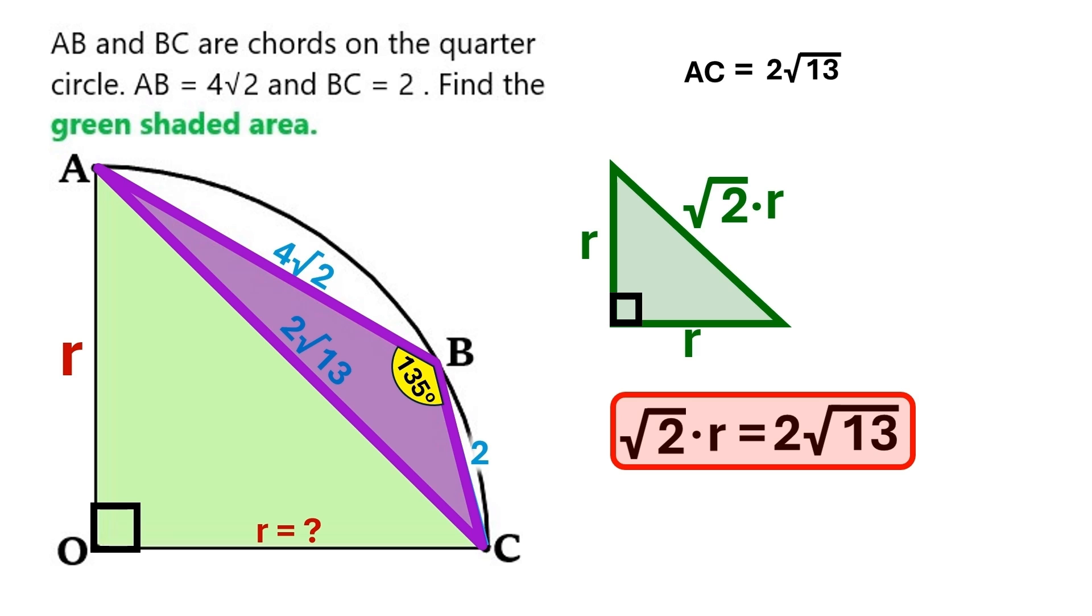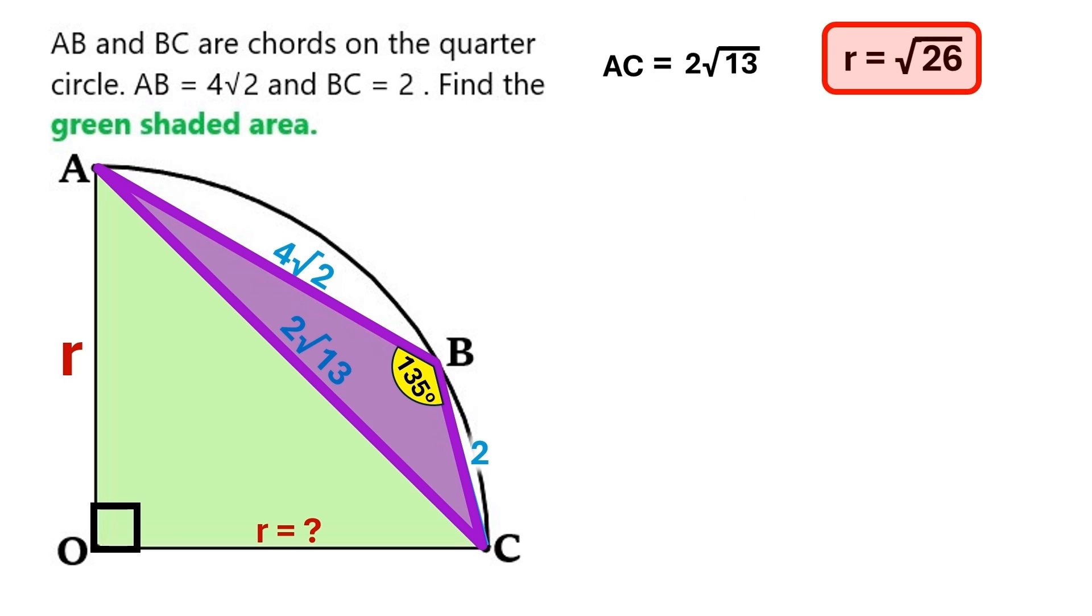Root 2 times r equals 2 times root 13. Let's simplify the equation by root 2. And we find this r is root 26. Thank you very much, son.